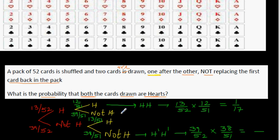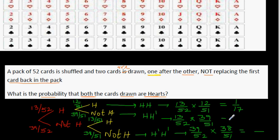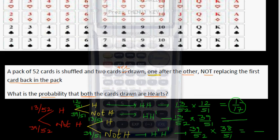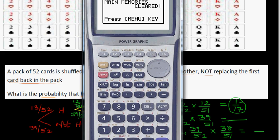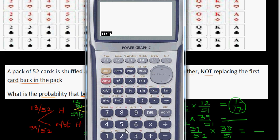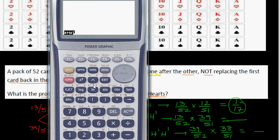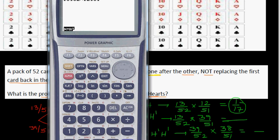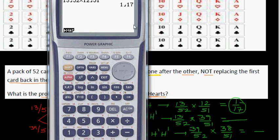For the heart and not-heart branch, you go along those branches: 13/52 times 39/51. Let me show you how to do this on a calculator. Entering 13 divided by 52 times 12 divided by 51 gives 1 out of 17, confirming our answer.